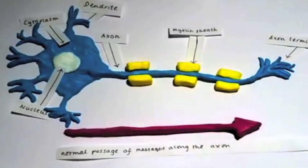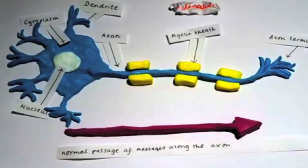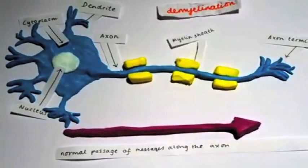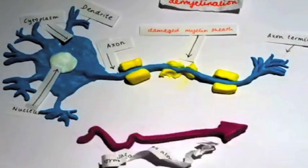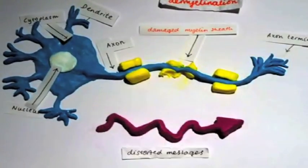As shown in this animation, when demyelination occurs, the message is distorted because the myelin sheath is destroyed.